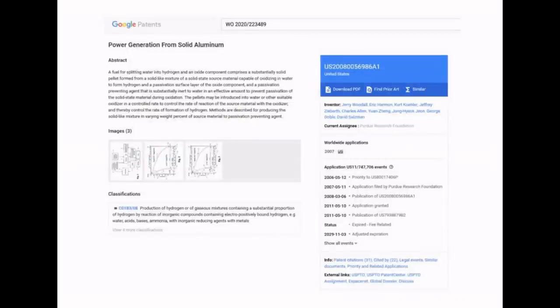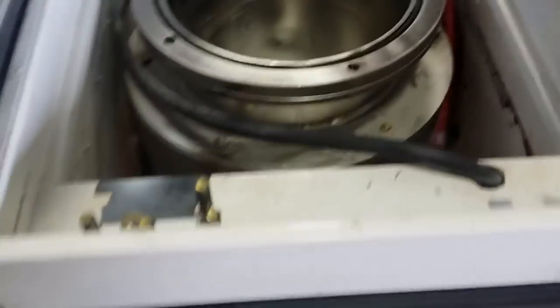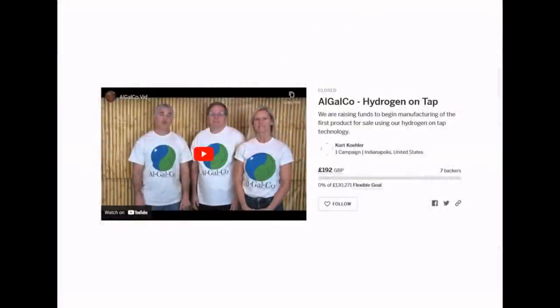They actually started a company because when they did this, they did exactly the same as UCSC. They rushed off to the patent office and tried to license it like mad, and they licensed it through an existing company in 2006 called AlGalCo, I believe. And it's still there, still in existence, trying to sell this system in what they call their Hydrogen on Tap. They've got their Hot 5 currently running and gave it a go doing an Indiegogo campaign. I don't know what the target was because it was a flexible goal, but they managed to raise all of 192 pounds. It's a little embarrassing, really, if you think about it.